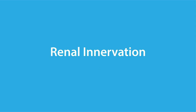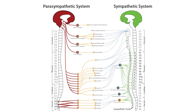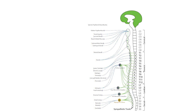In this lesson, we're going to examine the innervation of the kidneys by the autonomic nervous system and talk briefly about its influence on kidney function. The autonomic nervous system is divided into the parasympathetic and sympathetic pathways. Autonomic innervation of the kidneys is limited to the sympathetic nervous system, and because the sympathetic nervous system is complex, we'll limit our discussion to the sympathetic pathways that innervate the kidneys.